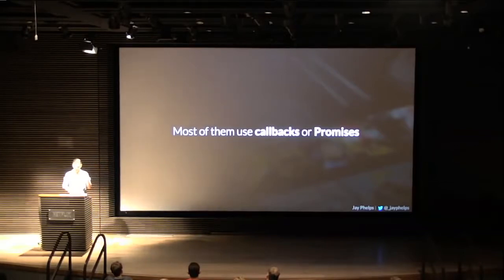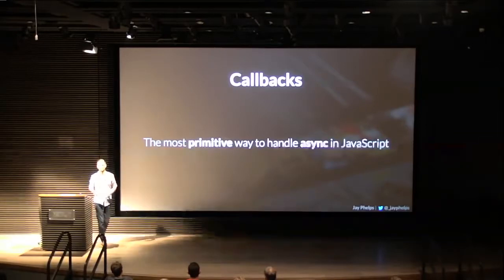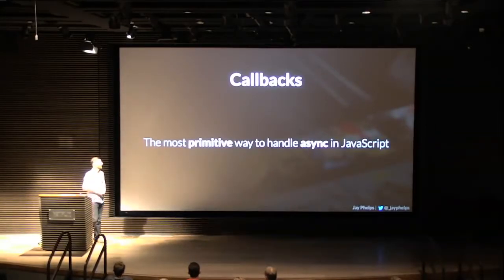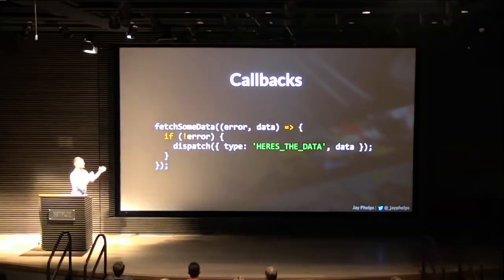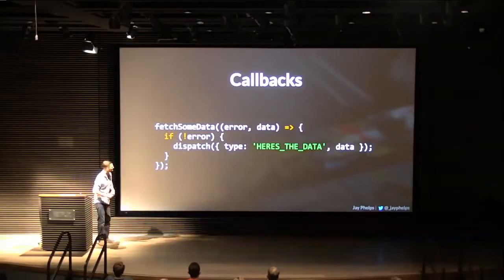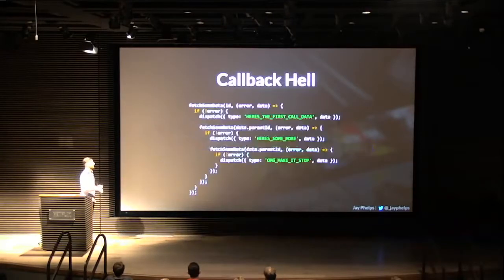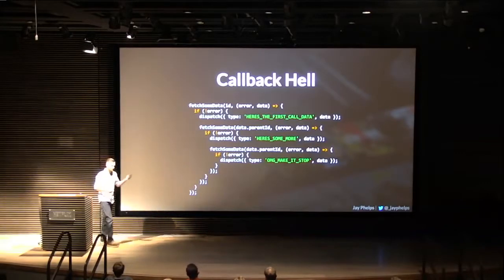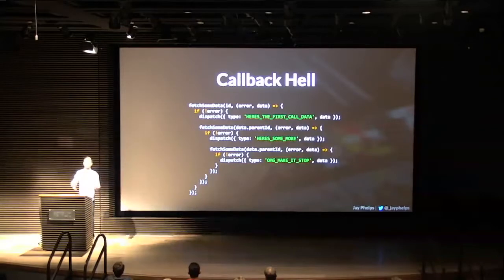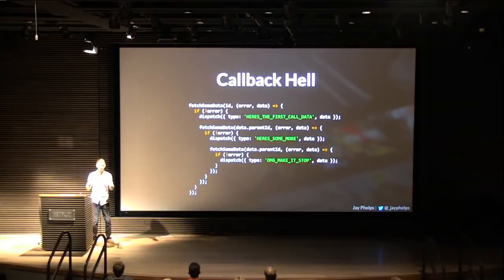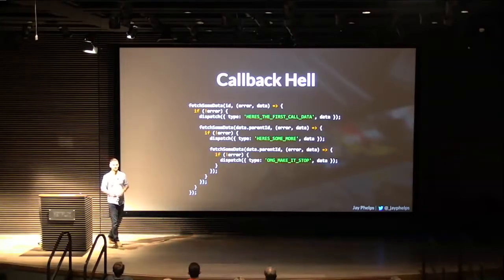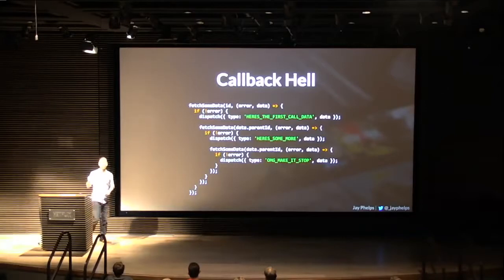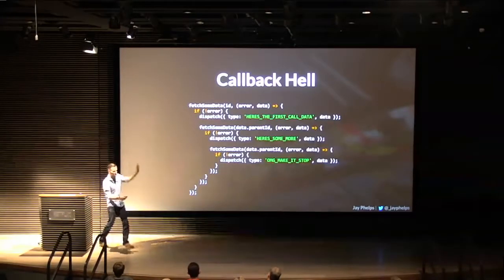Let's look at the two most popular options. Callbacks: almost everyone should be familiar with them as the most primitive way in JavaScript to handle async. You call a function, passing in a callback, and when the data comes back, you receive it or an error and do your work. There are lots of problems with callbacks, but one in particular is callback hell. When you want to chain async operations sequentially or in parallel and then do something else when they all finish, things get very complicated. My colleague Ben Lesh likes to call this the 'flying V' because it sweeps out more horizontally, just like the Mighty Ducks.